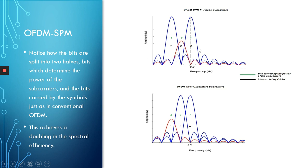Then we have a 1 again — a high-power subcarrier. In addition to this, we still have one bit which is carried by the QPSK symbol. QPSK carries two bits per symbol — one in the in-phase subcarrier and one in the quadrature subcarrier. But when using OFDM-SPM, we are able to transfer four bits with each pair of subcarriers instead of two.